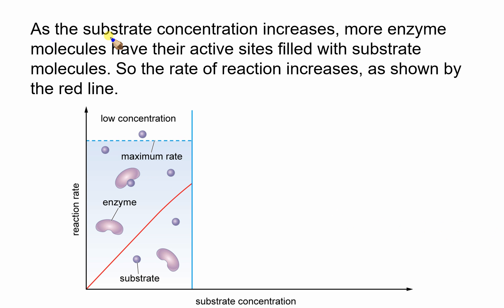As the substrate concentration increases, more enzyme molecules have their active sites filled with substrate molecules, so the rate of reaction increases. We see the red line rising because there's more chance of the substrate colliding with the enzyme and filling the active site.